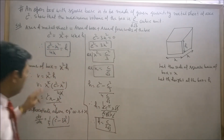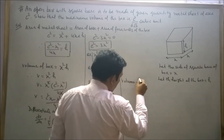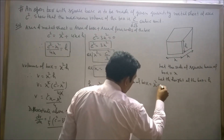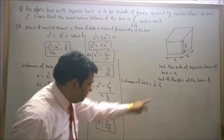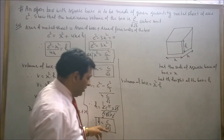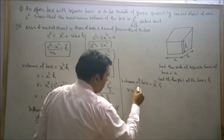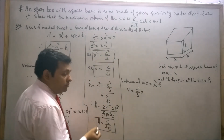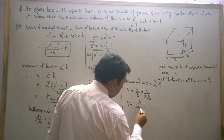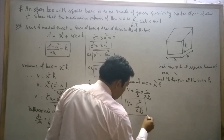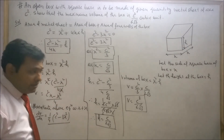Now, volume of the box is x squared into h. x squared equals C squared upon 3, and h equals C upon 2 root 3. Substituting these values, volume equals C squared upon 3 into C upon 2 root 3. Therefore, V equals C cubed upon 6 root 3.